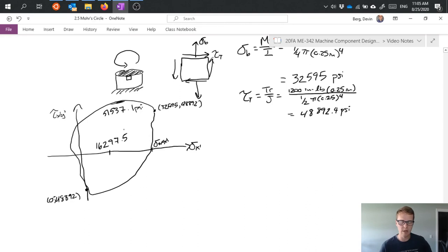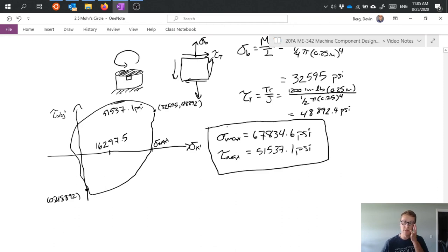So I'm just using my radius equation that we presented before, then I get sigma_max is equal to my center plus my radius. So I end up with 67,834.6 psi, and tau_max is that radius, so 51,537.1 psi. And those are typically the main values that I'm going to be interested in when I'm trying to understand my max state of stress.